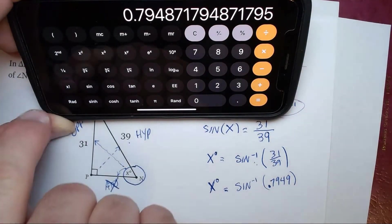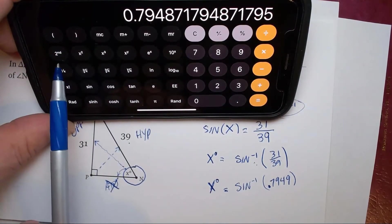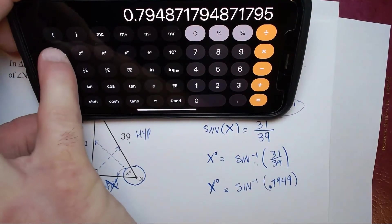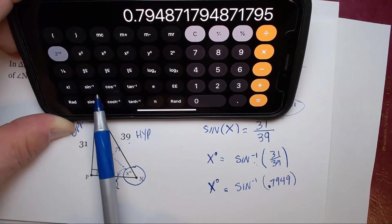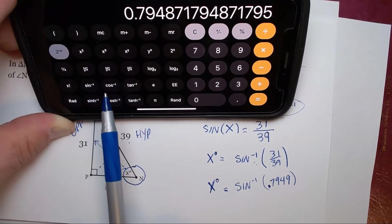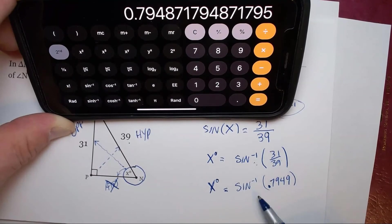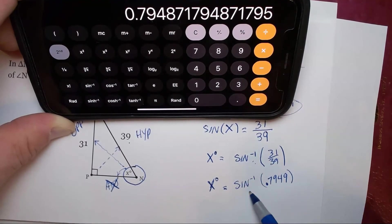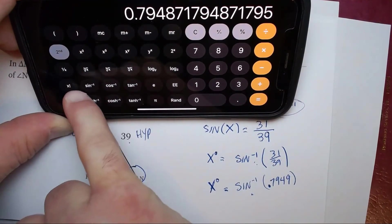We press the second button. See this button here on our calculator says second. Now you notice that my sine, cosine and tangent changed to the inverse sine, inverse cosine and inverse tangent. So we're ready to go. We're going to hit the inverse sine key right here.